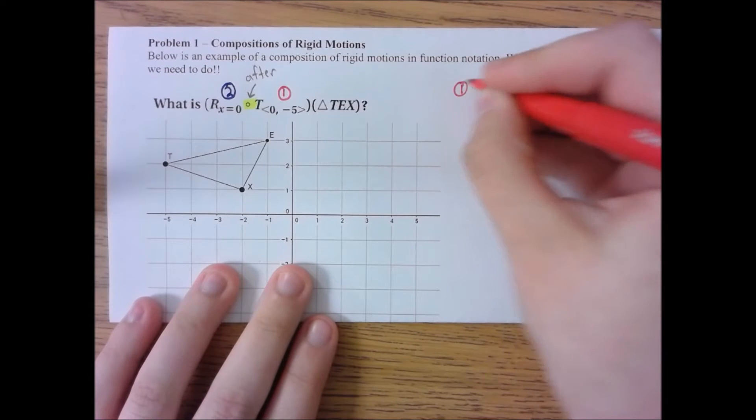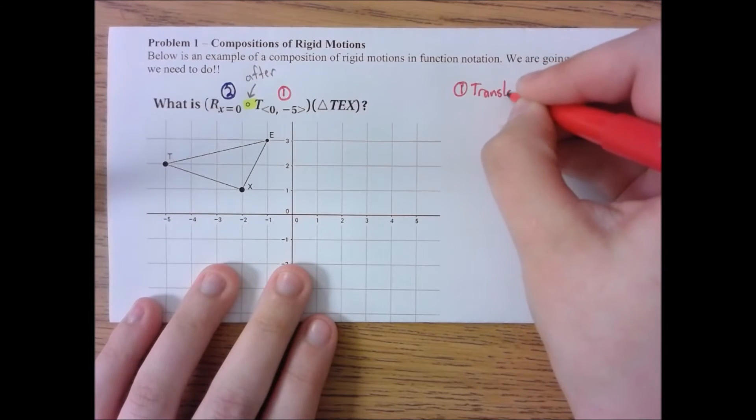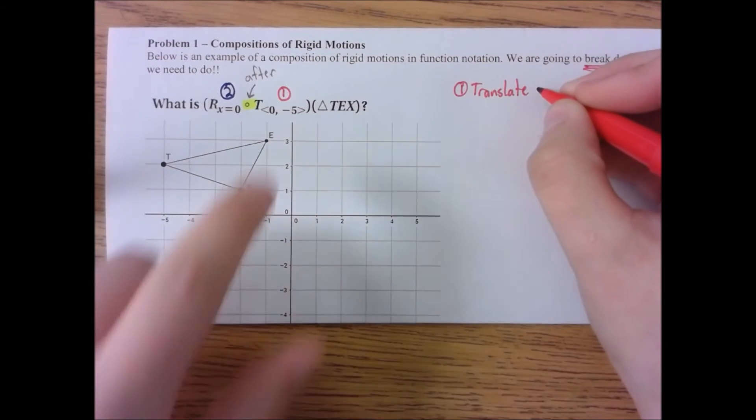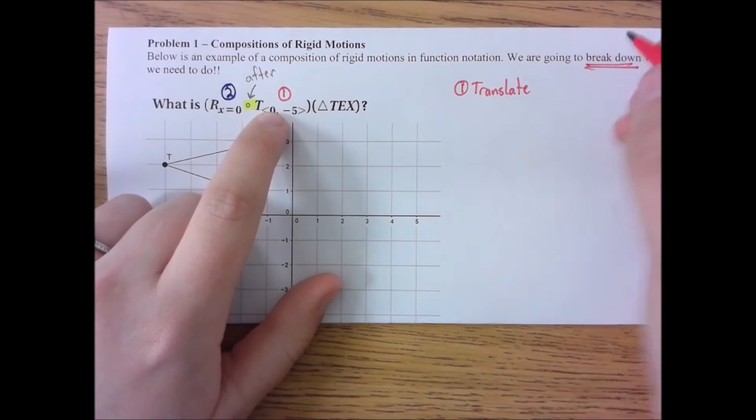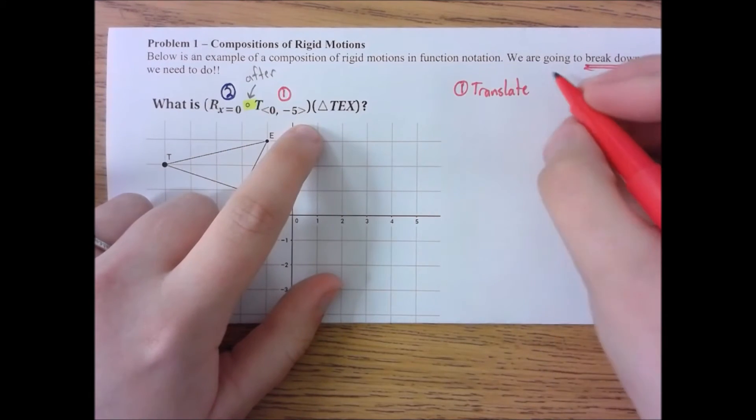So first step, we're going to translate zero, so we don't move any left and right direction, but we are going to go five units down.